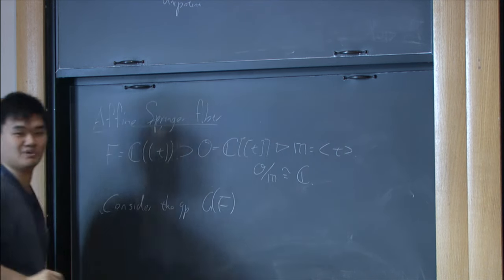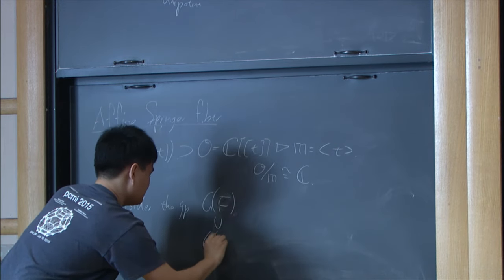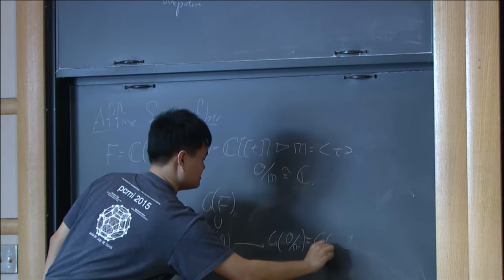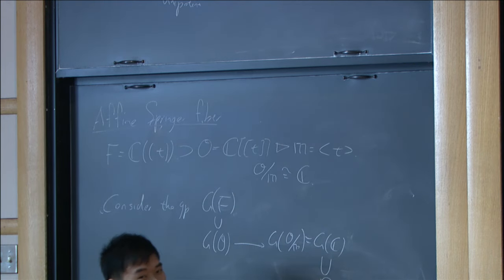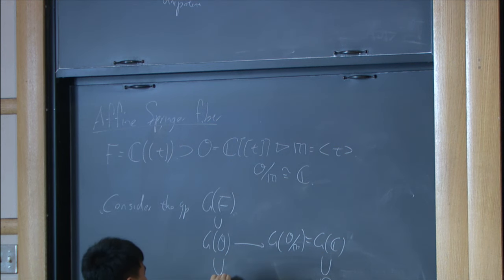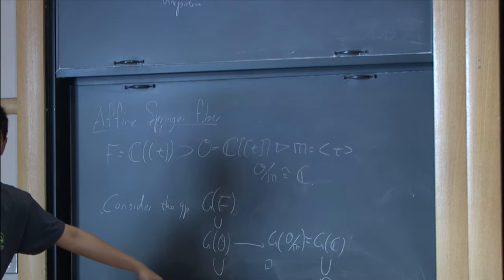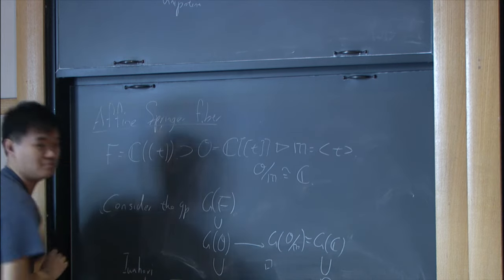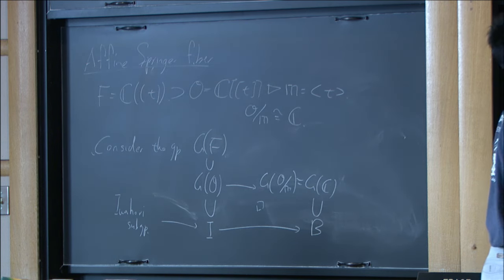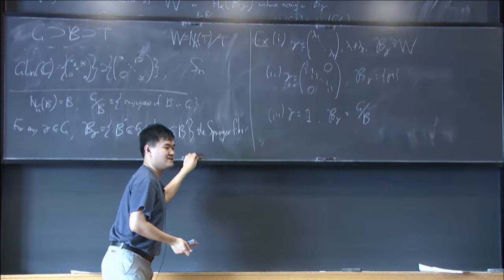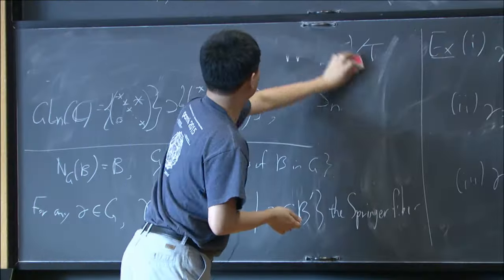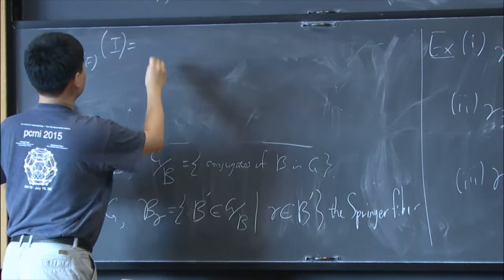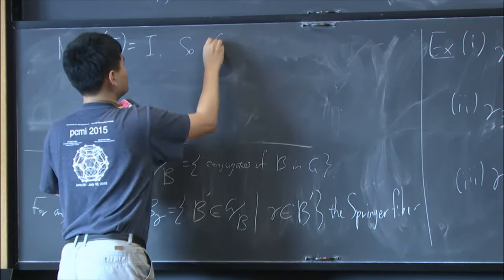So consider a group G with entries in F, for example GL_N(F). Inside this, I can consider loops with entries in O. Because O mod M is C, this is a map to G(O mod M), in other words, G(C). Inside this, I used to have the Borel. So I can take a preimage. Take a preimage here. And this we call the Iwahori subgroup. And now it's again true that the normalizer of Iwahori in the big group G(F) that we consider, so it's again true that the normalizer of Iwahori is the preimage of the Borel inside the whole group. It's again itself.